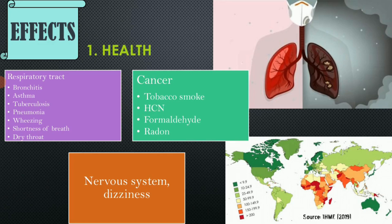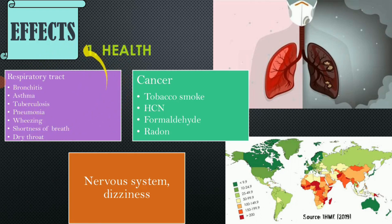Now looking at the effects, first let us look at the health effects in humans. Air pollution is known to cause a host of respiratory tract diseases like bronchitis, asthma, tuberculosis, and pneumonia. It causes lung cancer — breathing in tobacco smoke, hydrogen cyanide, sulfur dioxide, or formaldehyde over a long period of time leads to lung cancer, and in some cases the cancer can spread to other parts of the body as well.